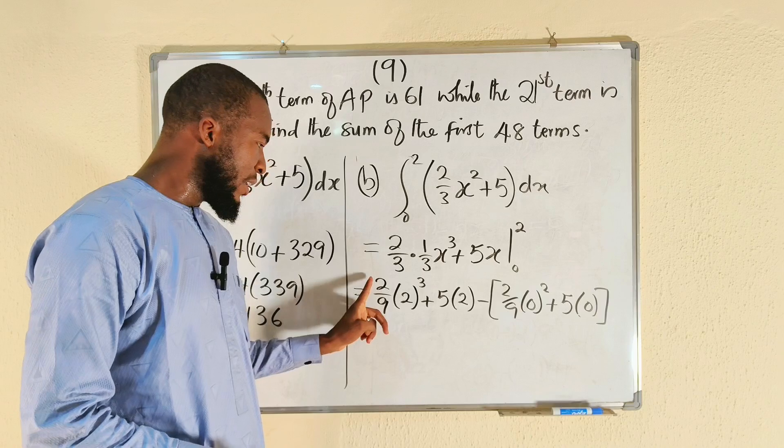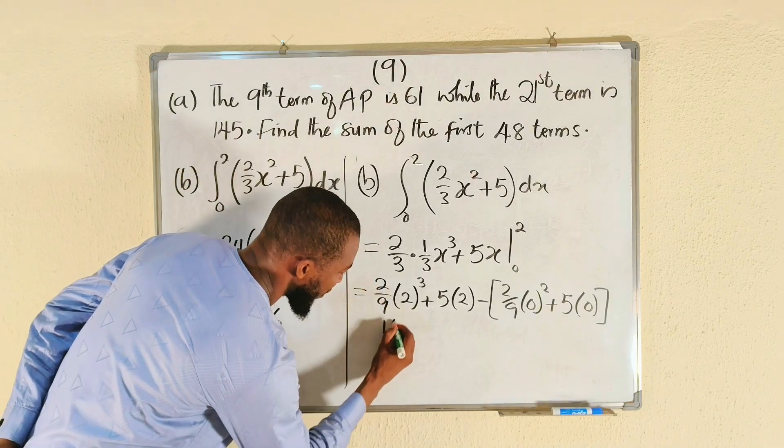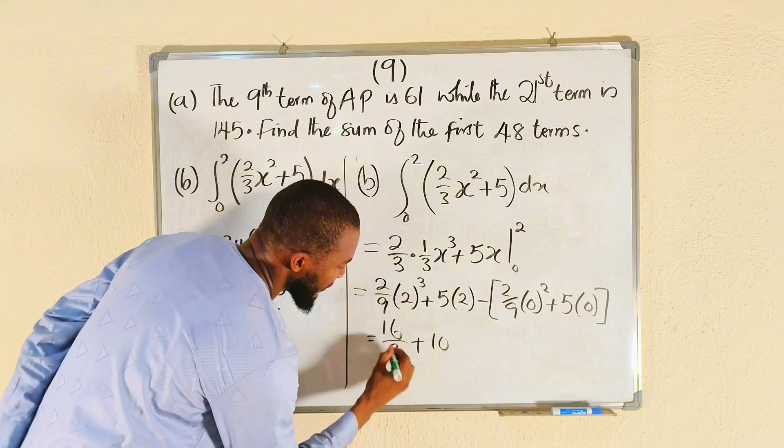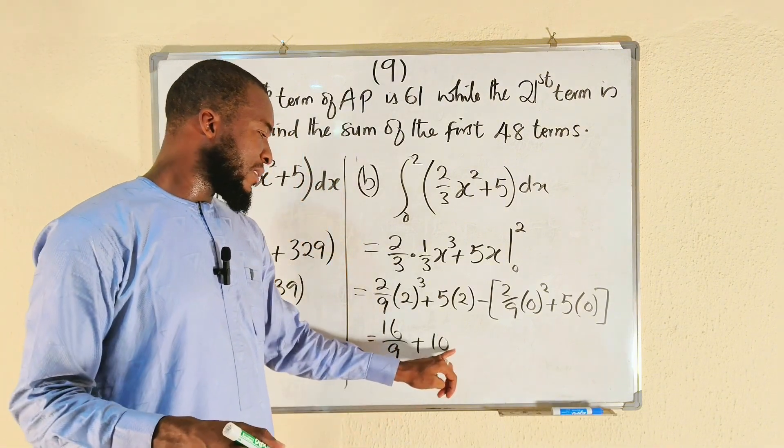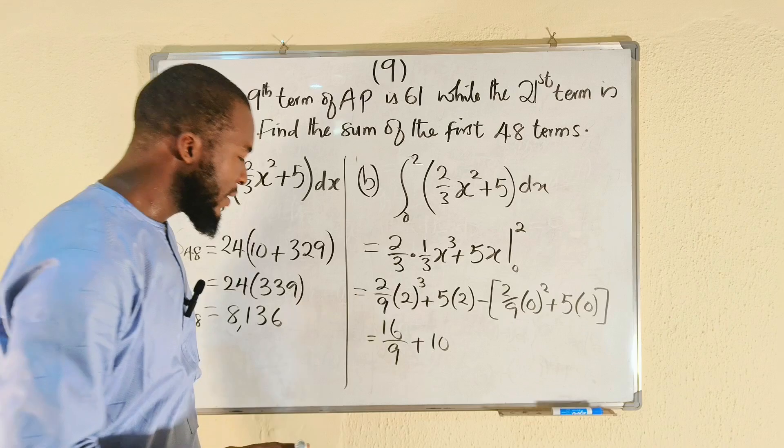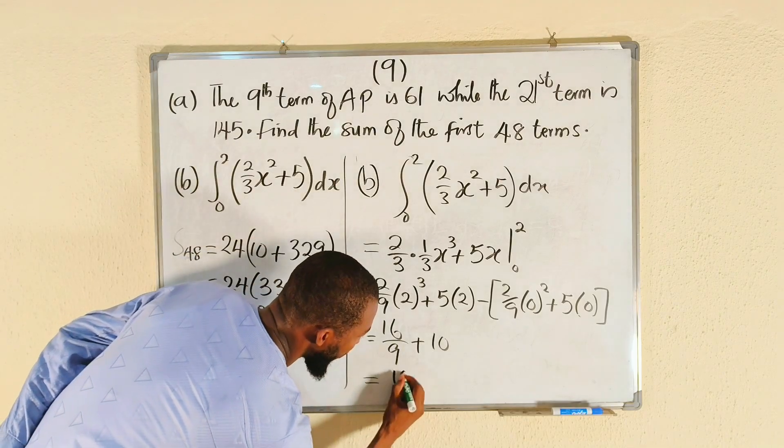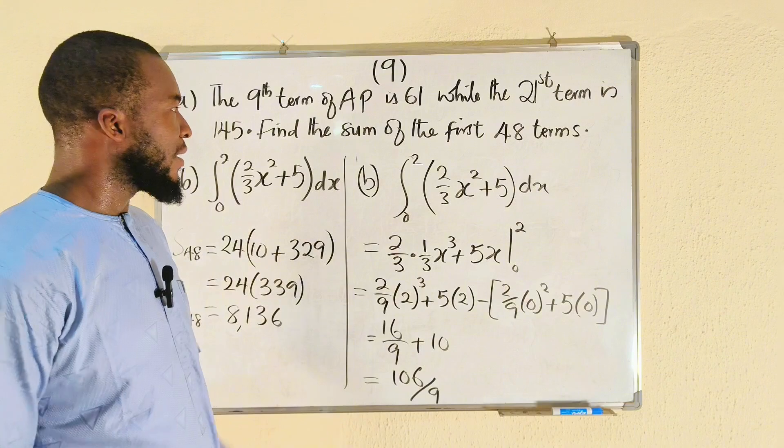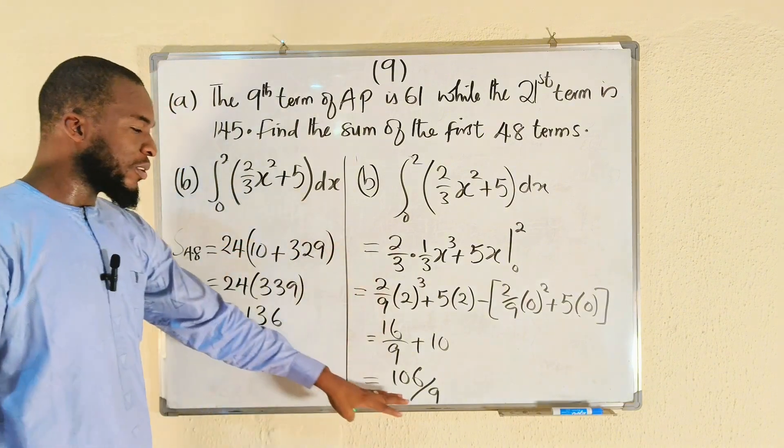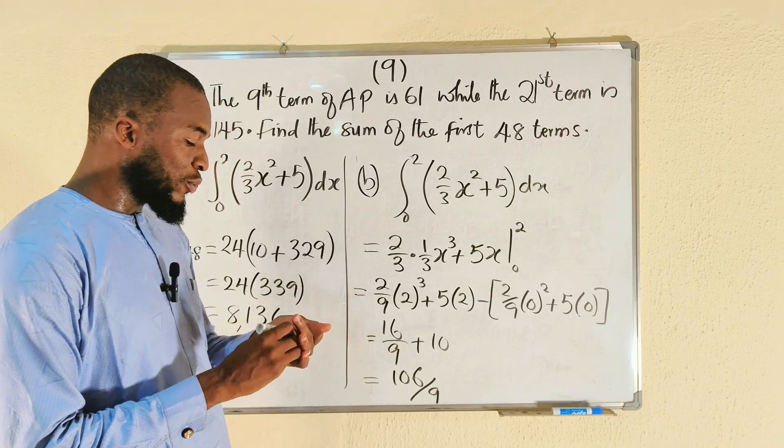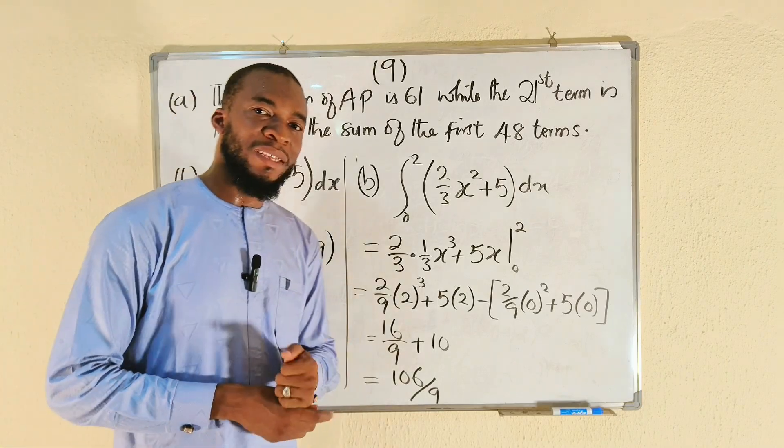9 times 10 is 90, plus 16 is 106. So this is 106 divided by 9, final answer. Once you evaluate this, you're going to get 106 divided by 9. As simple as that. In our next tutorial, we're going to solve question number 10.